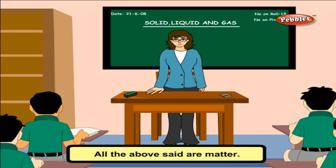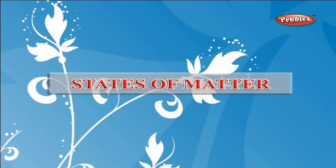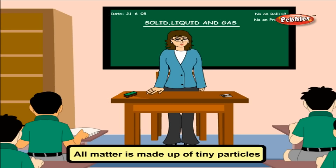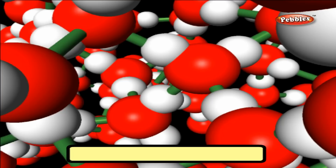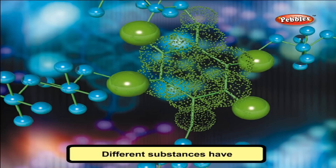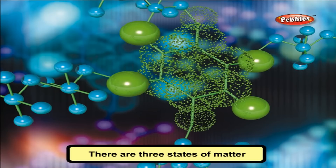States of matter. All matter is made up of tiny particles called molecules. They are attached to one another by some force. All the molecules of a substance are the same. Different substances have different molecules. There are three states of matter.